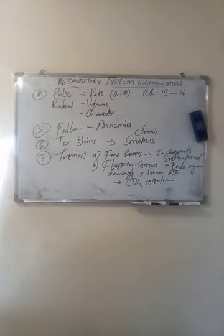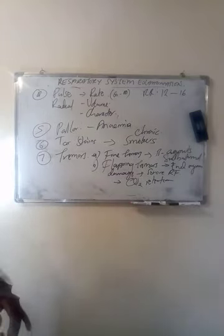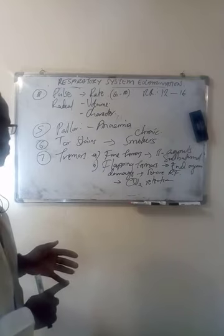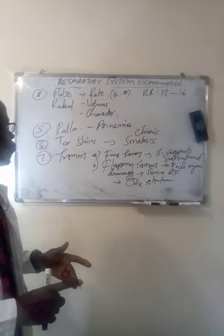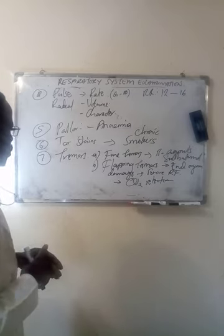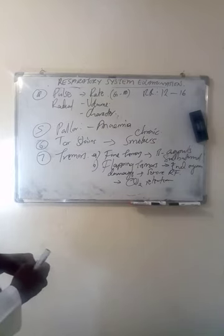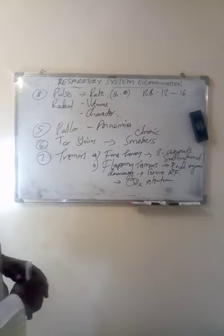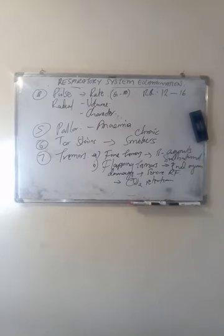Those are some of the things you look at when examining the hands in respiratory system examination. We've talked about finger clubbing, cyanosis, temperature, pallor, pulse, tar stains, and tremors. I'm going to end this video here and then proceed to other parts of the examination.